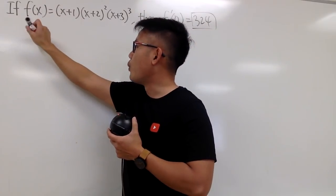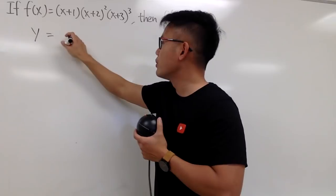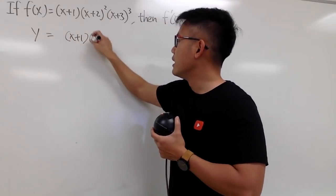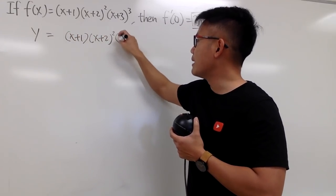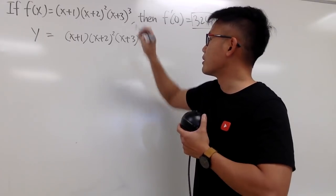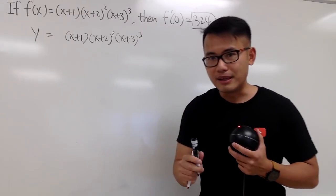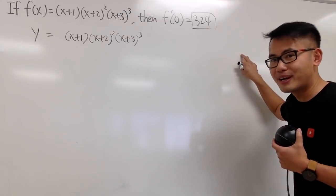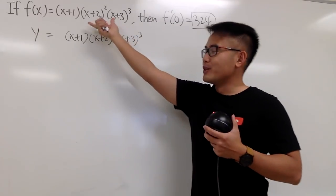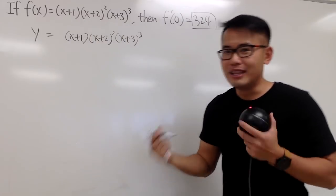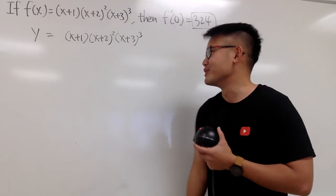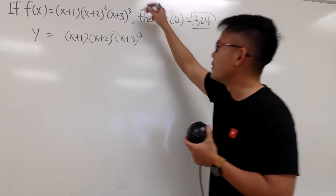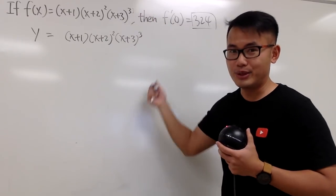First, I will write down y for f of x, and this is equal to (x+1)(x+2)²(x+3)³. This method is going to work regardless of how many factors, how many products that we have. If you took your time to multiply this out, let me know how much time did you spend. It's not that bad. But the moment if I change this to 30, you have to do the following way.